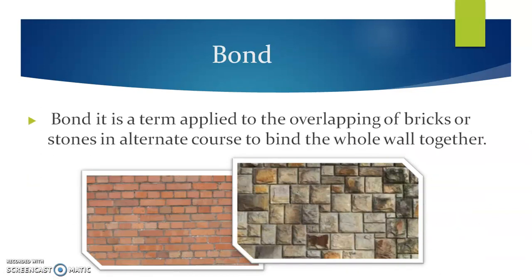Then the bond. Bond is a term applied to the overlapping of bricks or stone in alternate courses to bind the whole wall together. Bonding is essential for making the wall stable. In the figure, you will find that the continuous vertical joint has not been allowed to form. Rather, the alternate courses' vertical joints are similar in nature and one above another, but consecutive courses are placed such that there is no formation of a continuous vertical joint. This is called bond.